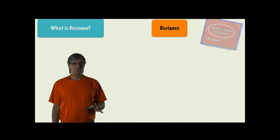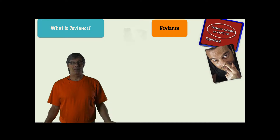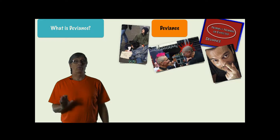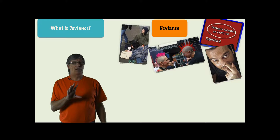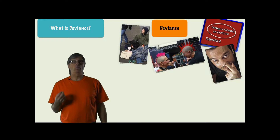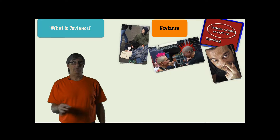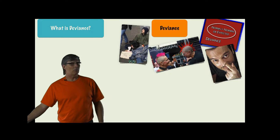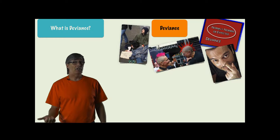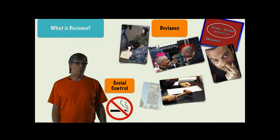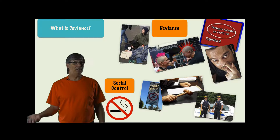All societies have norms to reinforce and help teach acceptable behavior. Deviance is any behavior, belief, or condition that violates cultural norms. It's relative — deviance is relative. An act only becomes deviant when society defines it as such. Each society defines deviance differently, and those lines vary from place to place, from time to time, and from group to group. Violations are dealt with through various mechanisms of social control, which is another key term in this area.